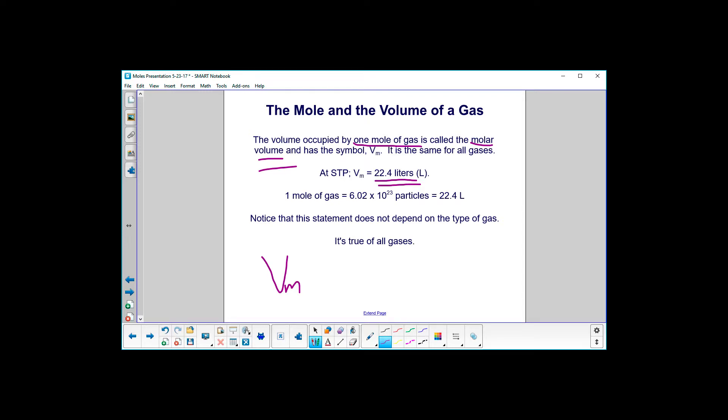And now let's relate it to Avogadro's number. One mole of gas is equal to 6.02 times 10 to the 23rd particles of the gas, and that's 22.4 liters. This statement does not depend on the type of gas. It is true for all gases.